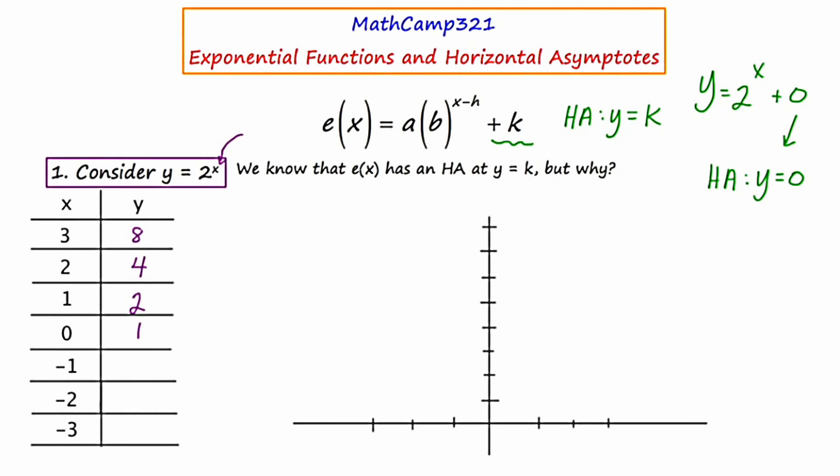Now here's where it gets interesting. If I substitute in a negative value, I really have to be thinking about my rules of exponents. And it just so happens when I substitute in negative one, I end up getting two to the negative one, which is the same as one over two to the first. And one over two to the first is one half.